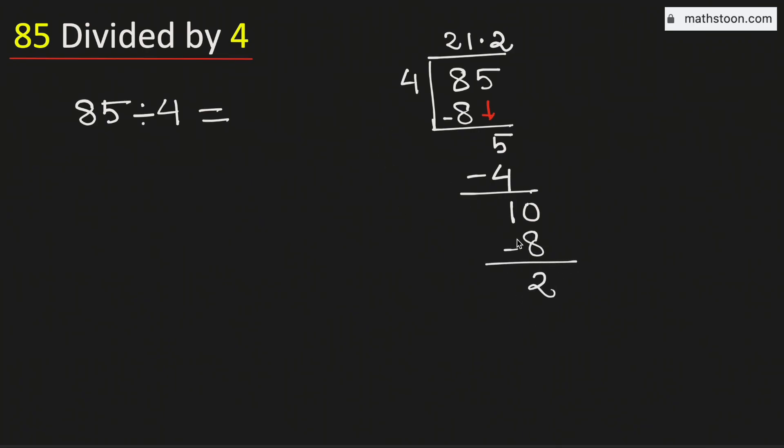Again 2 is less than 4, so we will again borrow 10. And we know 4 times 5 is 20. Subtract, we get 0.